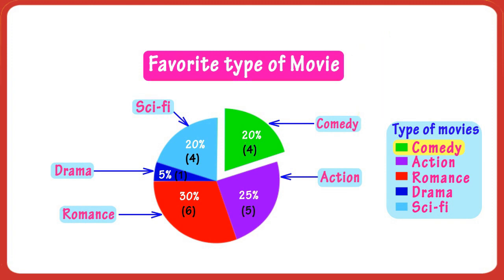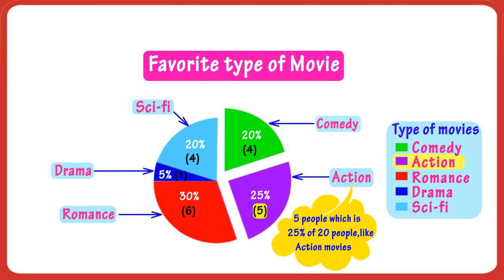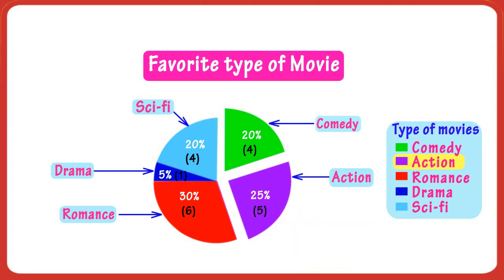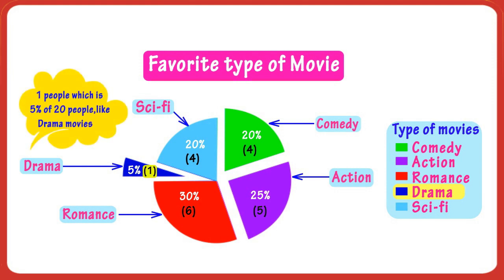The labels on the graph tell us the purple portion represents the fraction of people that likes action movies. The label also says 5 people, which is 25% of 20 people, like action movies. The blue portion represents the fraction of people that likes drama movies. The label says 1 person, which is 5% of 20 people, like drama movies, and so on.